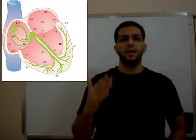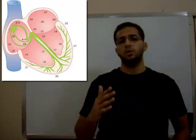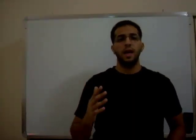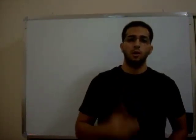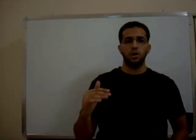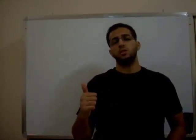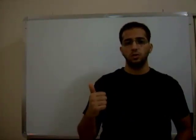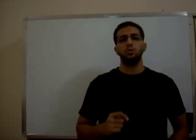The slowest conduction velocity belongs to the atrioventricular node, and it has an important role in ventricular filling. The fastest is the Purkinje system. We are going to go through every structure and its conduction velocity speed. The sinoatrial node and atrioventricular nodes have a conduction velocity of about 0.02 to 0.1 m/s.